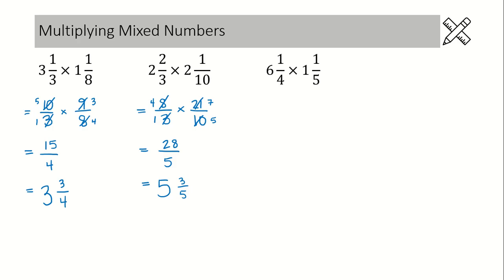All right, let's practice this one here. 6 and 1 quarter times 1 and 1 fifth. Can't multiply with mixed numbers, so we need to change these to improper fractions. Our first fraction will have a numerator of 25. In our second fraction, we're going to have a numerator of 6.